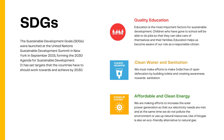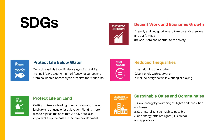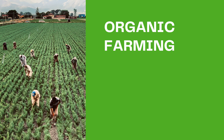Sustainable development is defined as a development that meets the needs of the present without compromising the ability of future generations to meet their own needs. For example, sustainable agriculture consists of environmental-friendly practices or farming methods that allow the production of agricultural crops or livestock without damage to humans or natural systems. It also involves preventing the use of chemicals so as to avoid adverse effects to soil, water, and biodiversity.